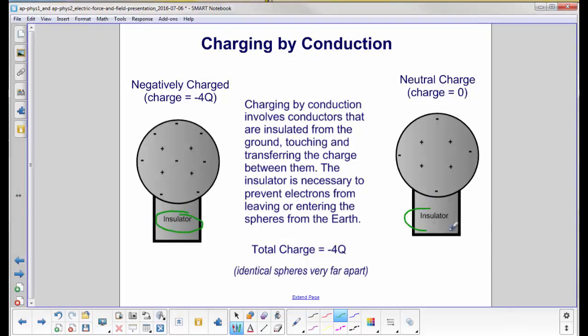Here's the insulator. Ground is somewhere down here and here's our charged spheres. The insulator is necessary to prevent electrons from leaving or entering the spheres from the earth.